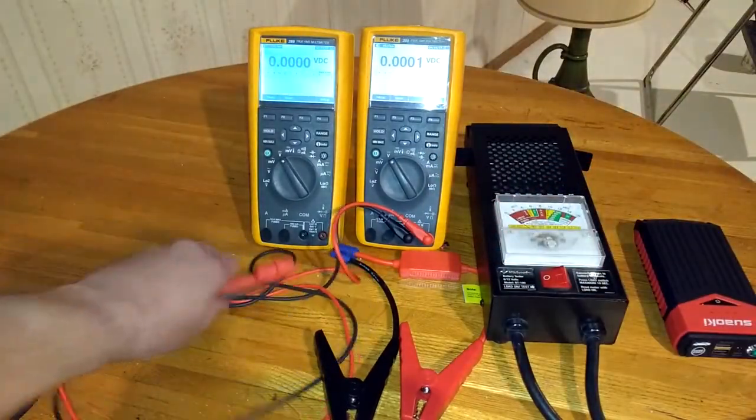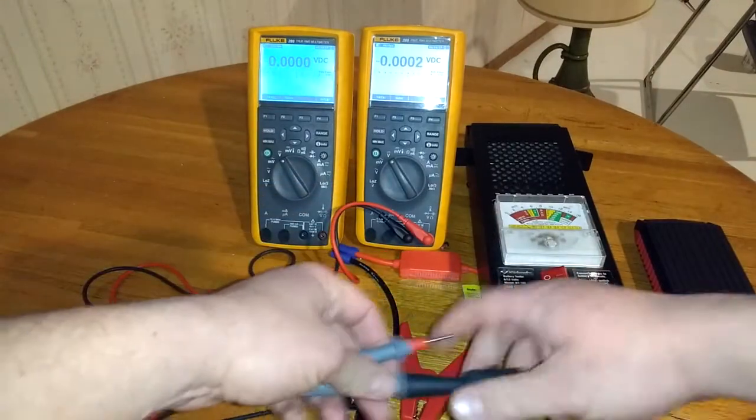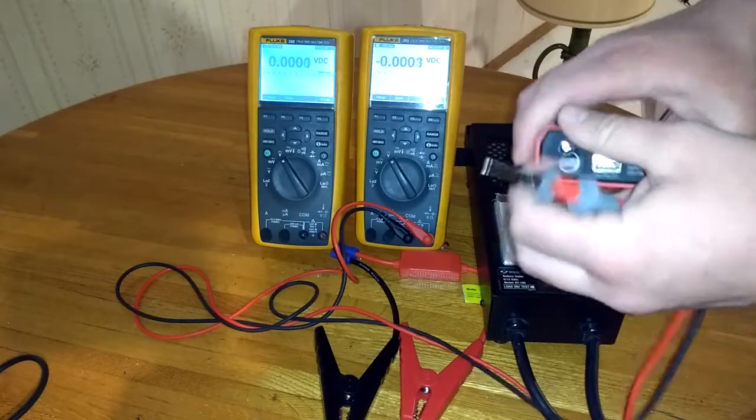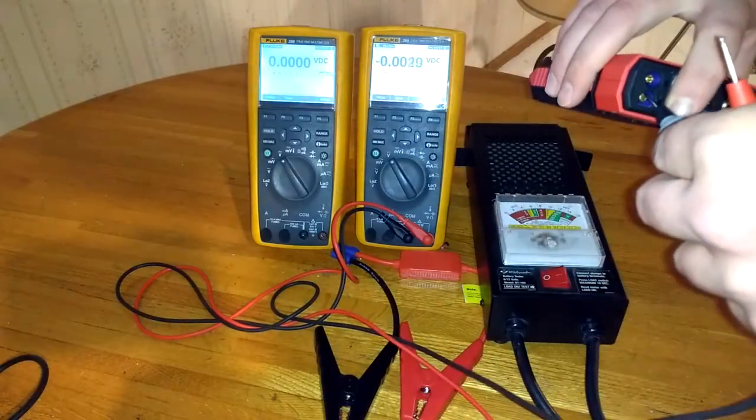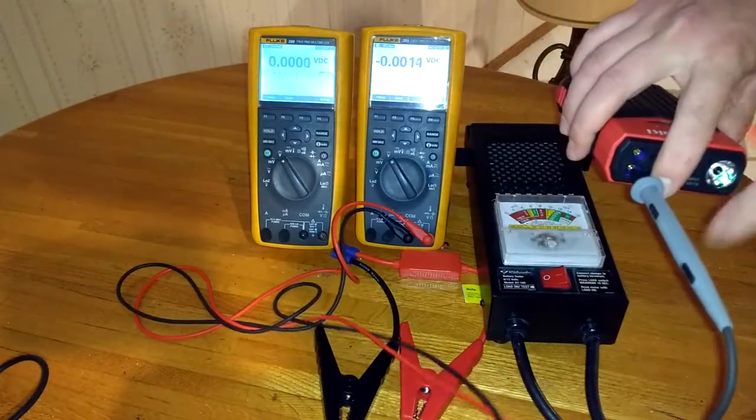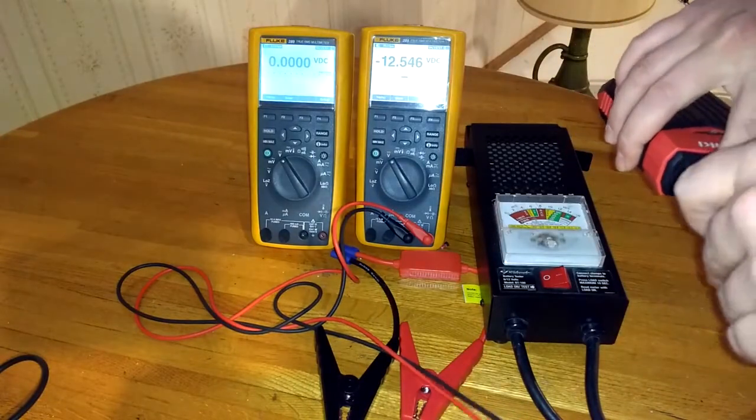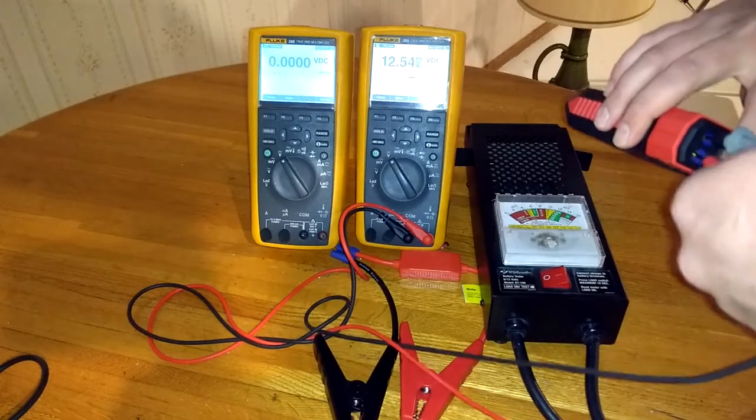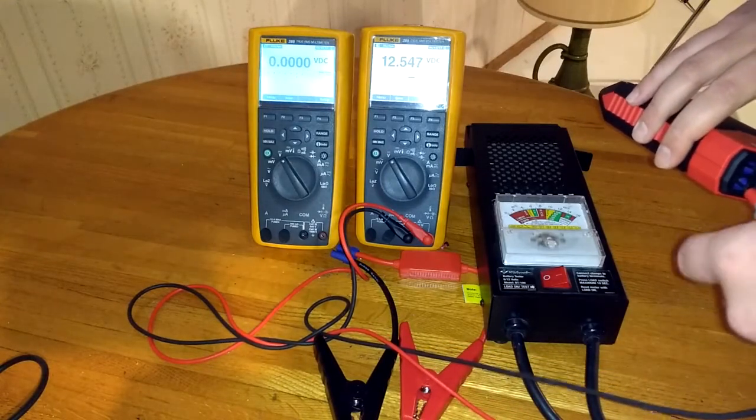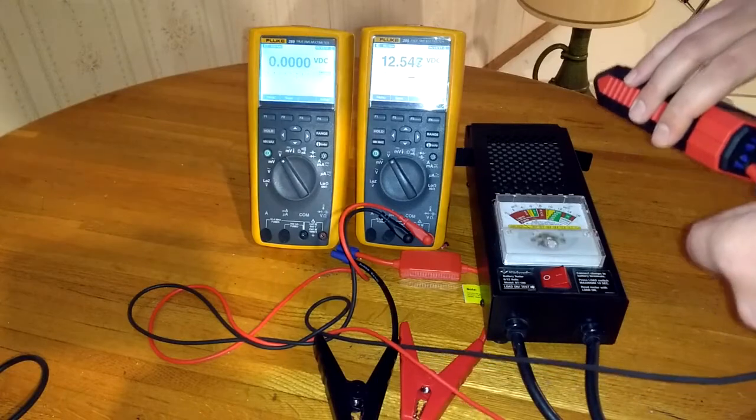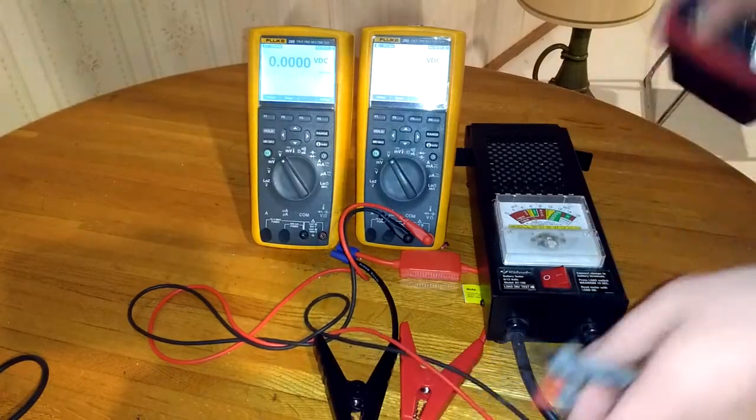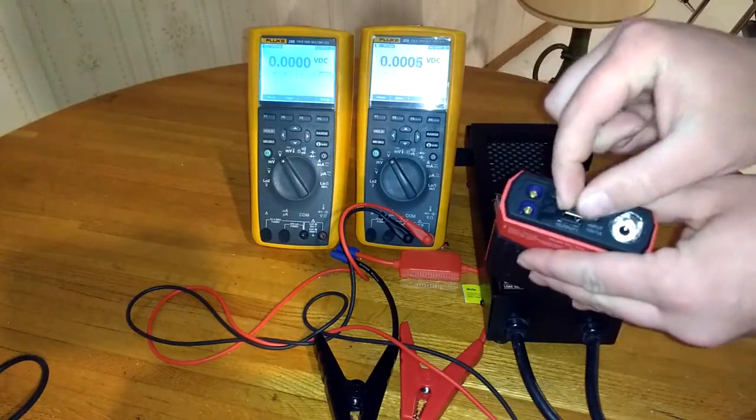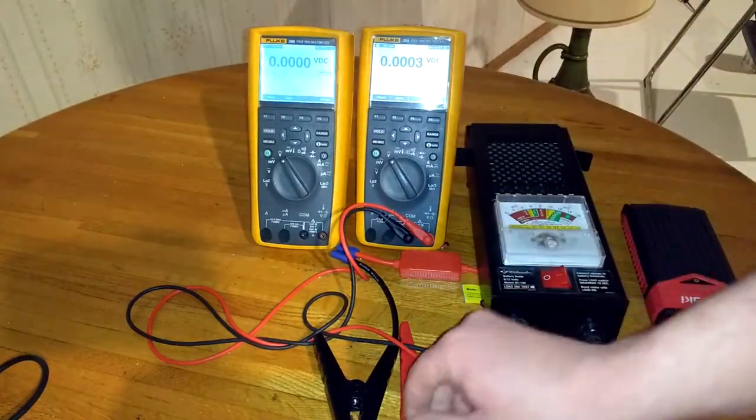So if we take and we measure the voltage with the unit off in this plug, we can see it's showing twelve point five volts with the unit actually powered off. So that tells me that more than likely this plug is just a direct connection to the battery.